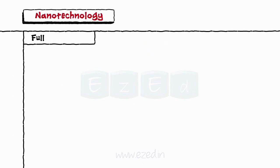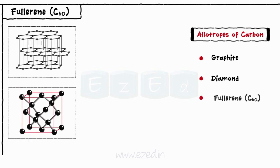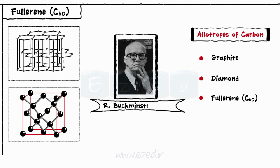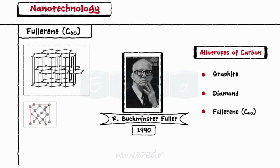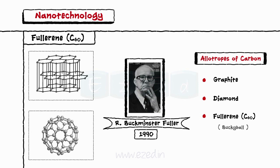Let's study about fullerene now. The well-known allotropes of carbon are graphite and diamond. Nanotechnology has helped to get the third allotrope of carbon, fullerene C60. This molecule was named after R. Buckminster Fuller and was first isolated in 1990. This structure resembles a soccer ball having alternate patches. Hence, the nickname given to fullerene was Buckyball.